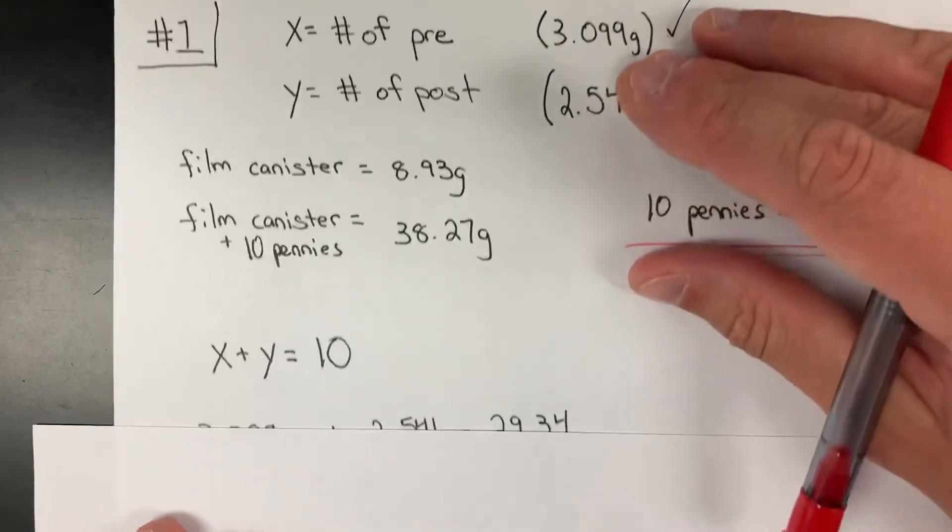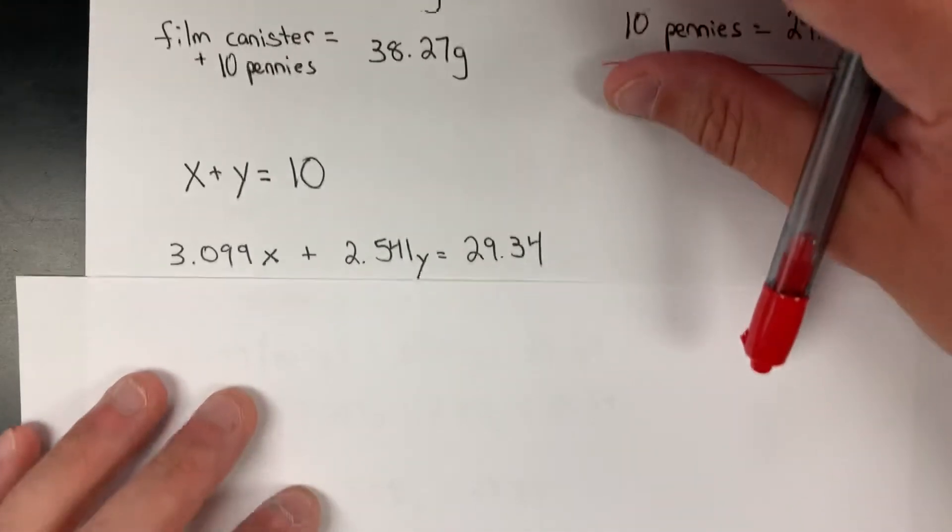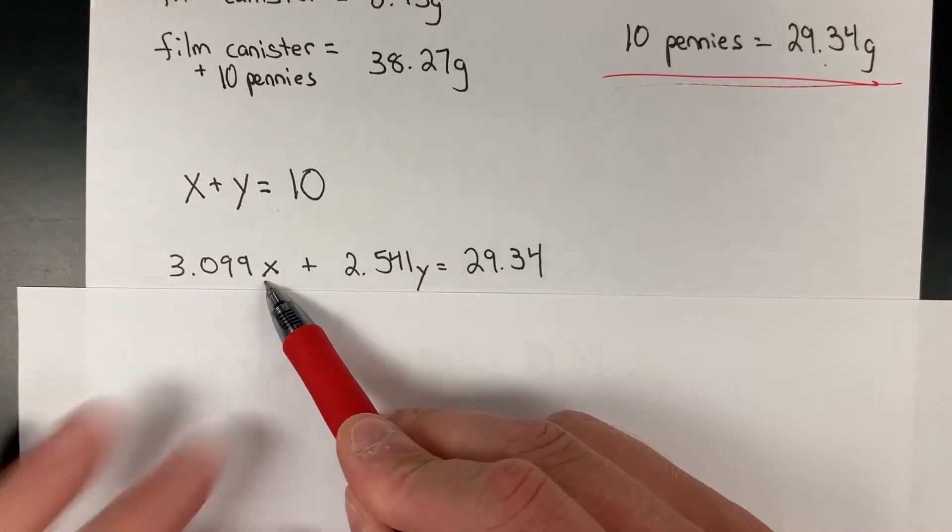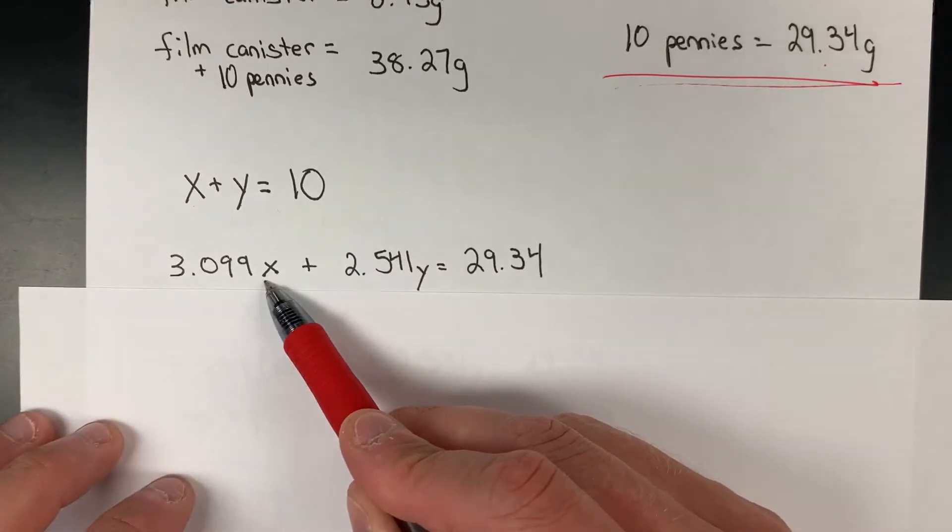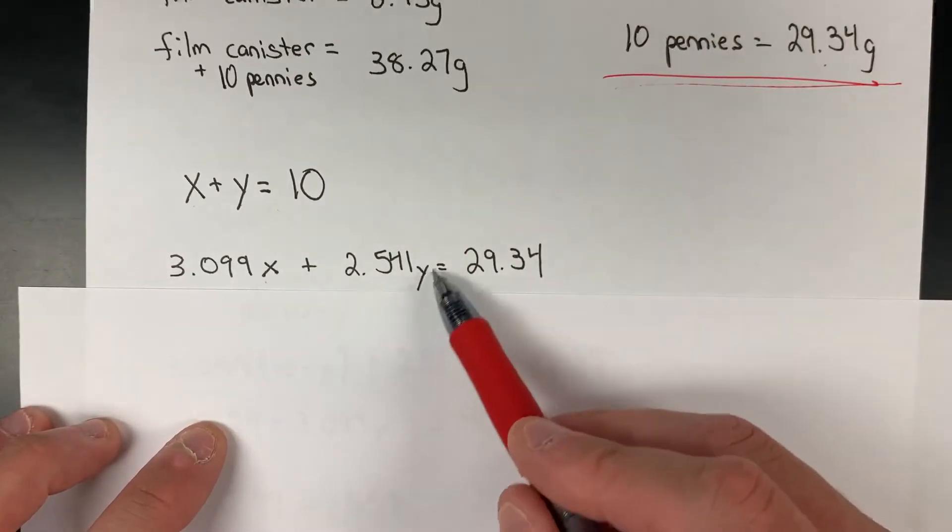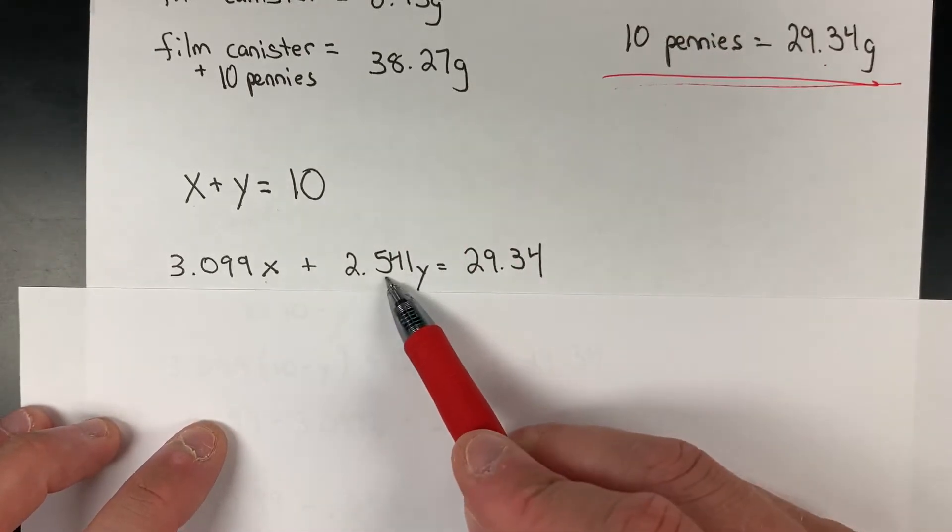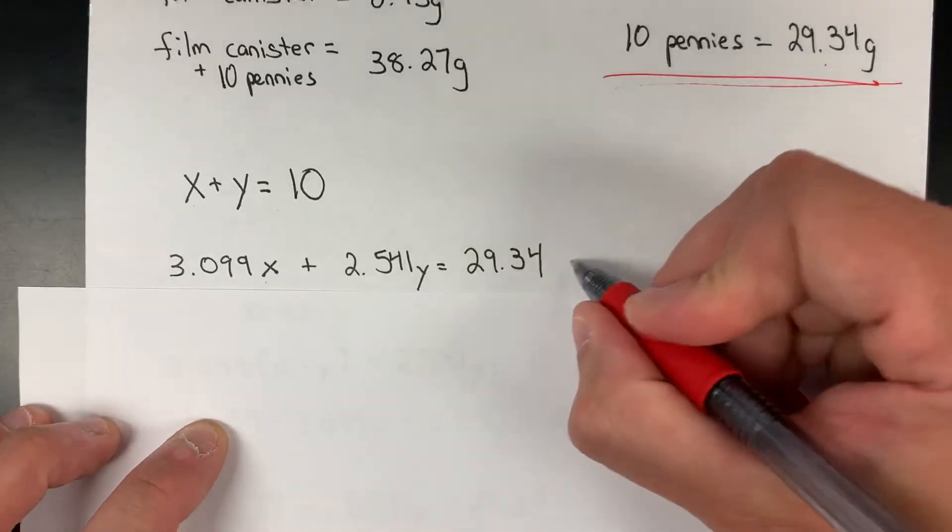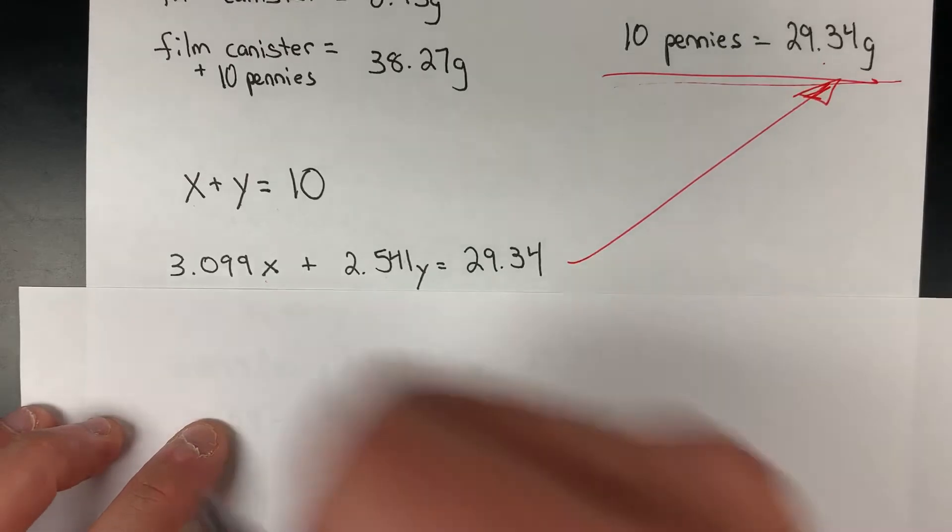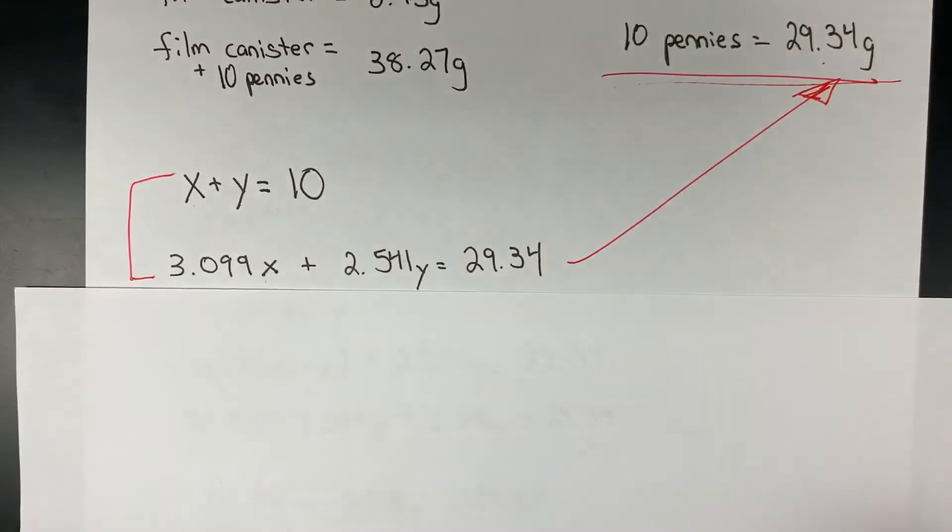The second equation talks about the overall mass of those pennies inside, where however many pre-pennies there are multiplied by 3.099, plus the number of post-pennies multiplied by 2.511, the sum gives us the total mass of the pennies inside, 29.34. So these are the two algebraic expressions that we need to come up with.